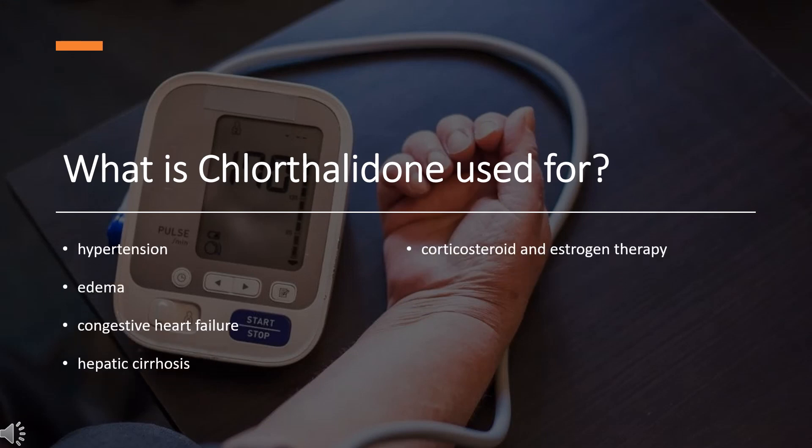What is Chlorthalidone used for? Chlorthalidone is indicated in the management of hypertension either as the sole therapeutic agent or to enhance the effect of other antihypertensive drugs in the more severe forms of hypertension. It is also indicated as adjunctive therapy in edema associated with congestive heart failure, hepatic cirrhosis, and corticosteroid and estrogen therapy.